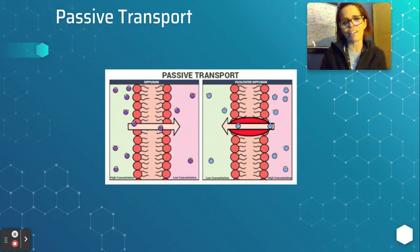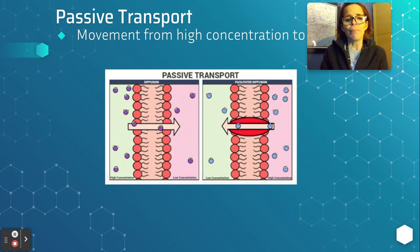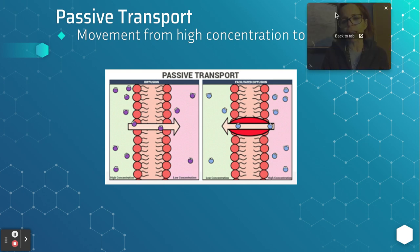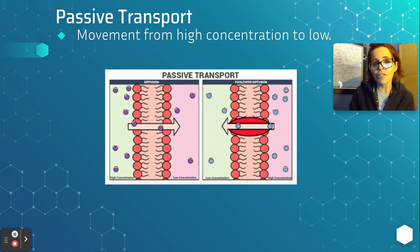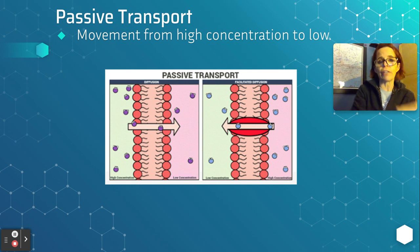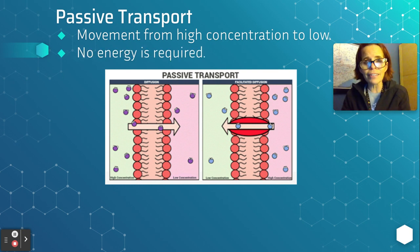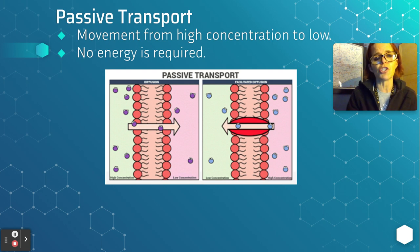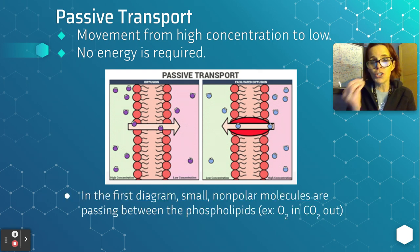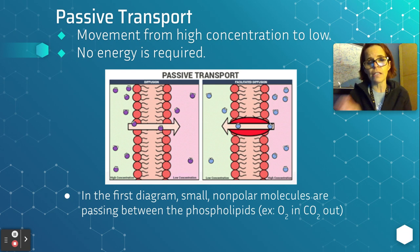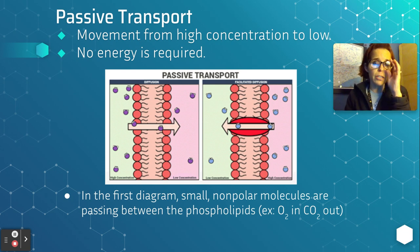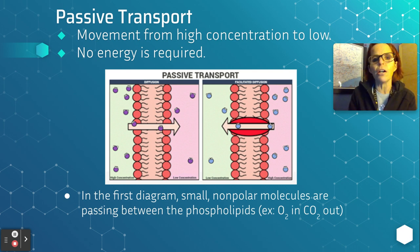The first thing we're going to talk about is passive transport. Passive transport is movement of molecules from areas of high concentration to areas of low concentration — imagine a ball rolling down a hill. It happens automatically; you don't need to use any energy. What you do need to pay attention to is which molecules can actually be transported across the membrane through diffusion automatically without any kind of helpers.